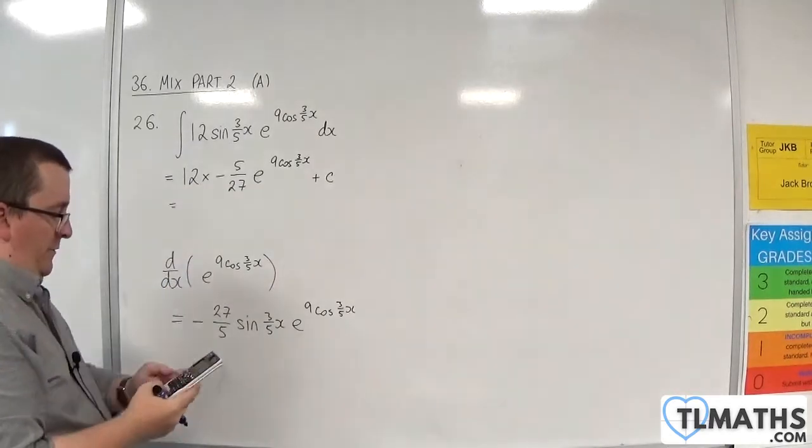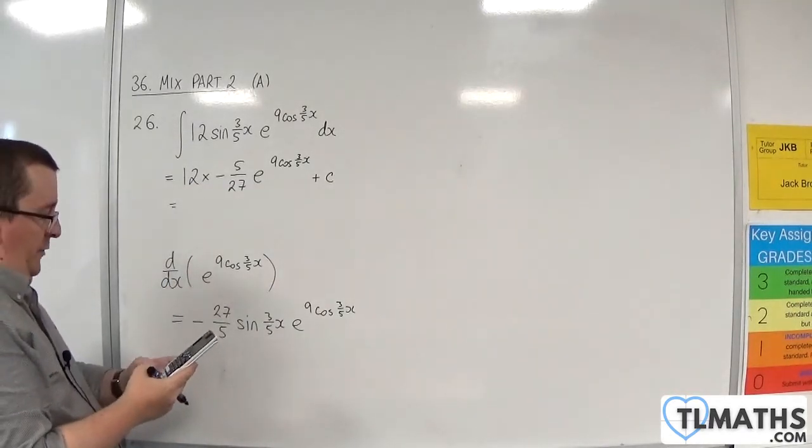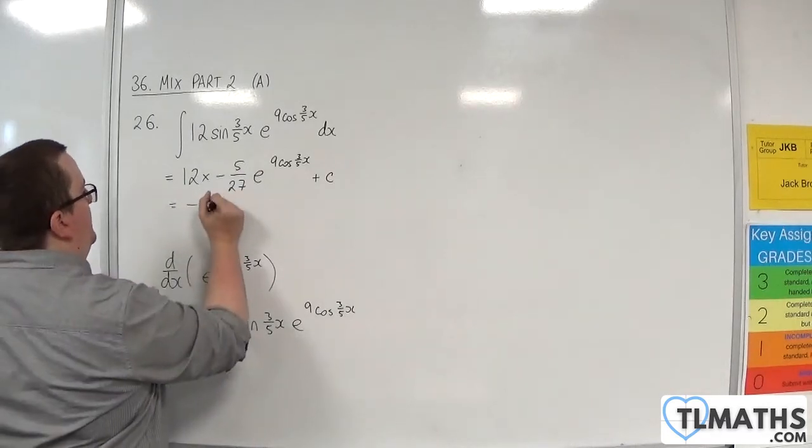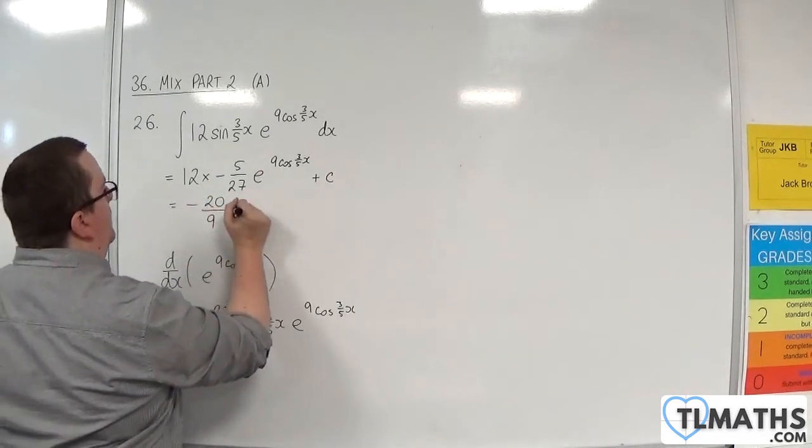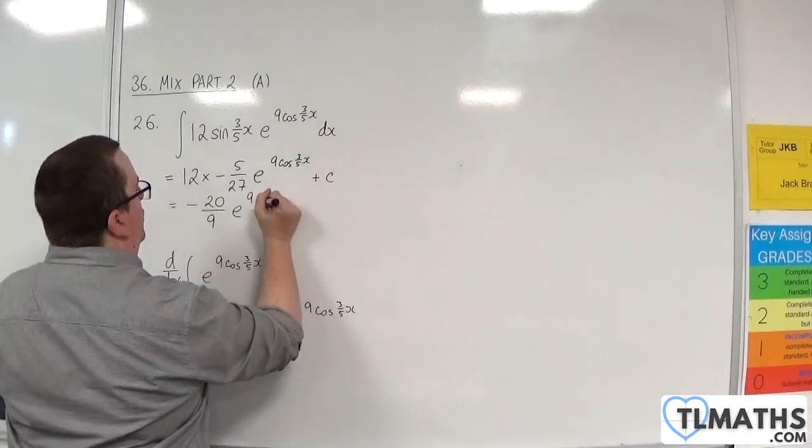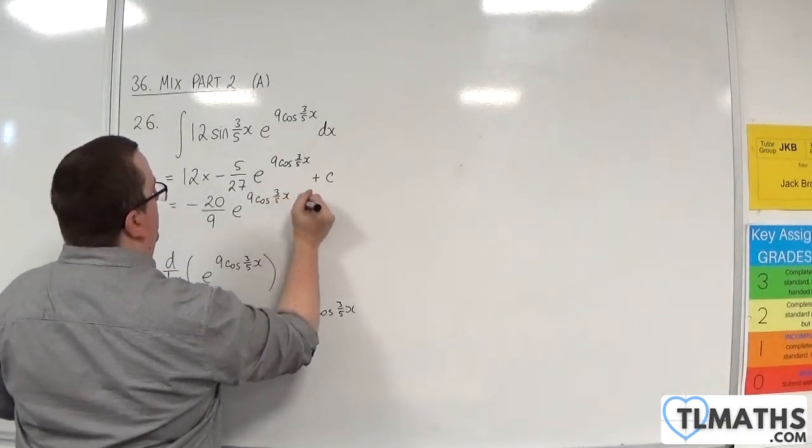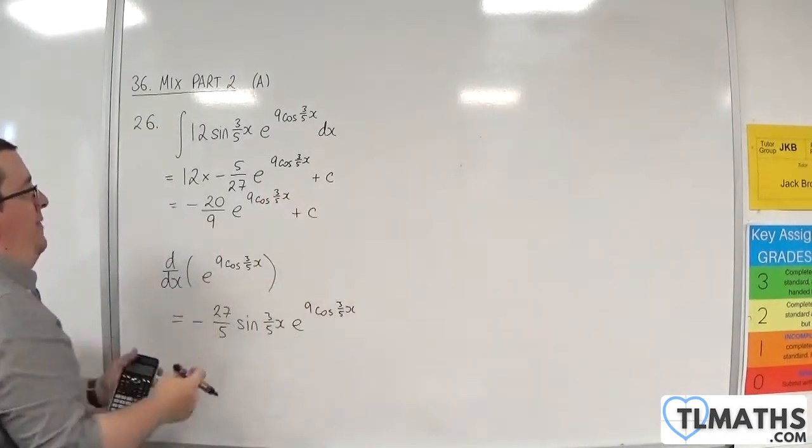So we have 12 times minus 5 over 27, which is minus 20 over 9, e to the 9 cosine of 3/5 x, plus a constant c. And that is my integral.